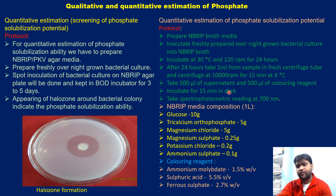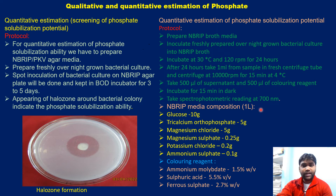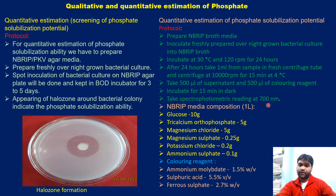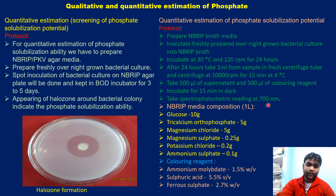The 500 microliters of coloring reagent and 500 microliters of supernatant from the culture are mixed in a single fresh Eppendorf centrifuge tube and incubated for 15 minutes in the dark. After 15 minutes, the spectrophotometric reading — OD — is taken at 700 nanometers. This gives absorbance values corresponding to different phosphate concentrations.